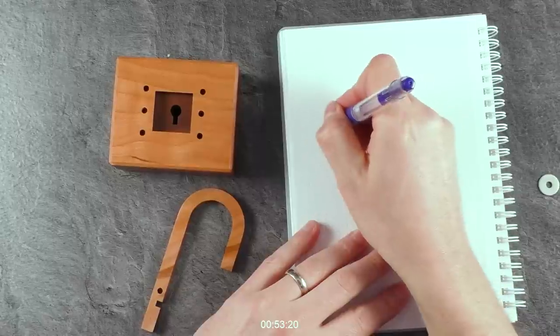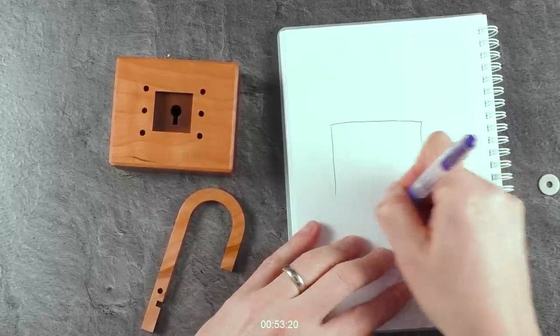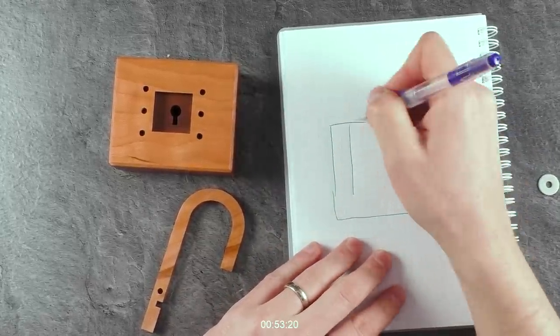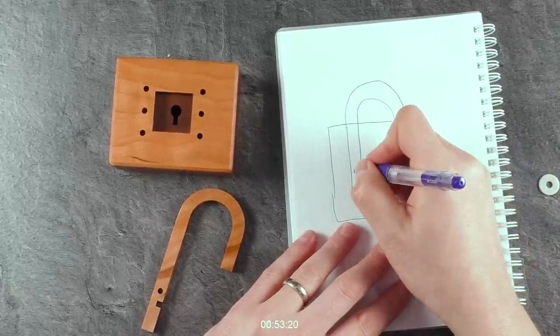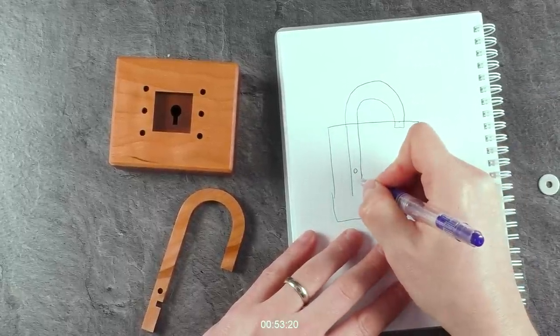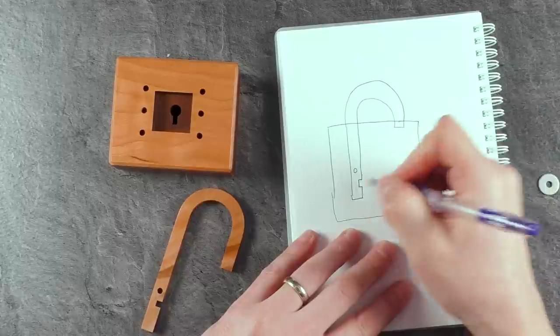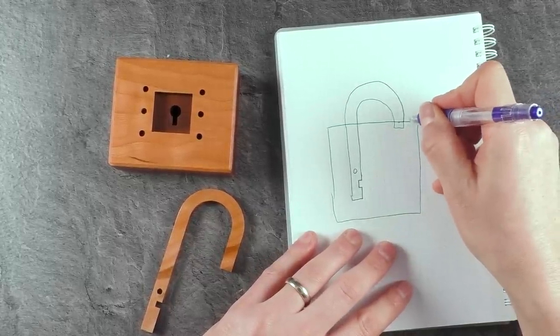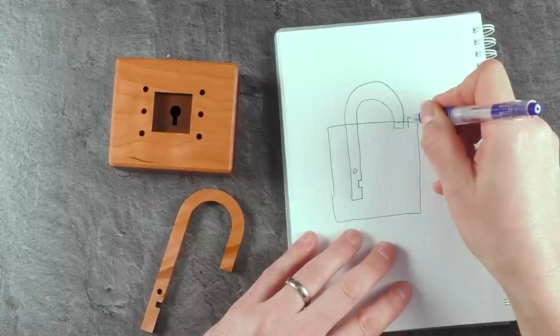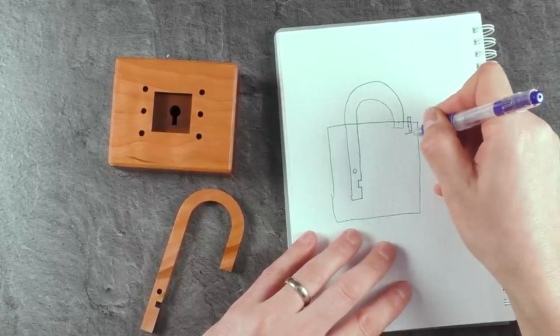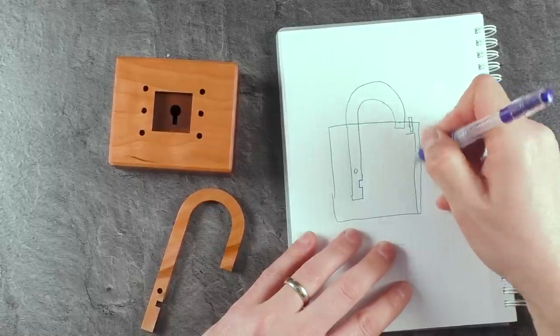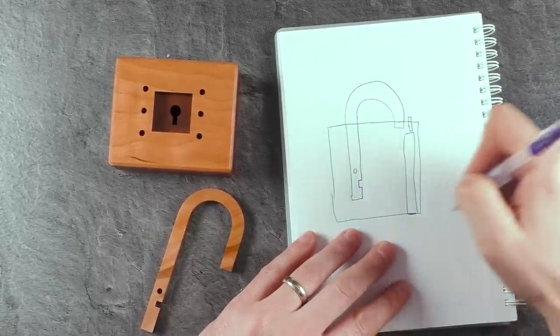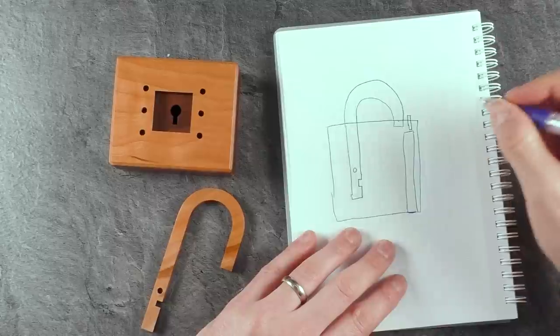I imagine it to work in the following way. You have in the body you have here the shackle with the cutout for the pin and with this small notch here. Okay. Then you have over here the slider or the pin that is pushing the slider out of position. Then you have the slider going all the way down here like so. And in this slider there are three cutouts.